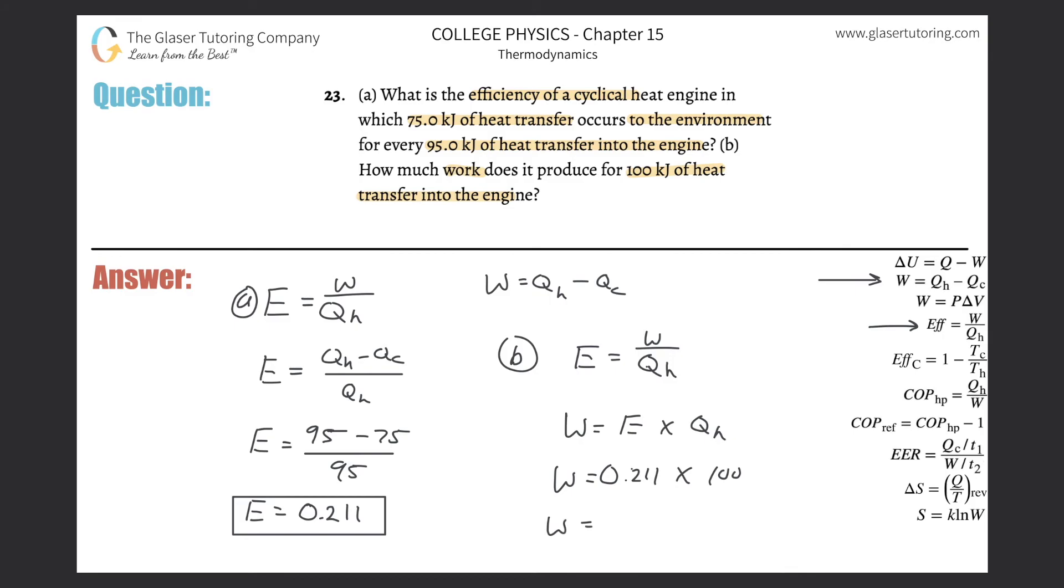So basically, I can take that efficiency of 0.211 and multiply it by the 100 kilojoules. And the work output now would be roughly, just doing the math here, about 21.1 kilojoules. This is a kilojoule value.